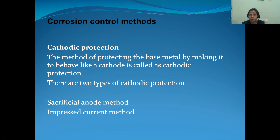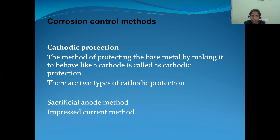What is cathodic protection? Cathodic protection is converting the base metal — the metal which we want to protect — forcibly to the cathode, by connecting the base metal to the anode or cathode. In cathodic protection, we have two methods: one is the sacrificial anodic method and another is the impressed current cathodic protection.